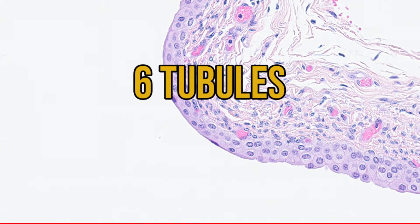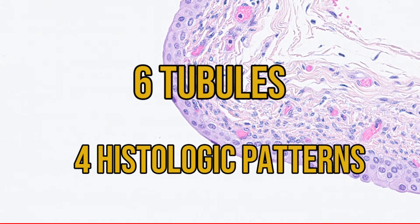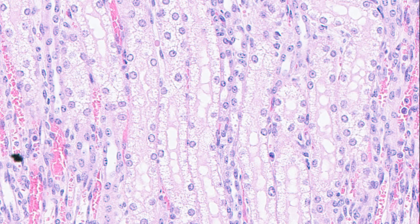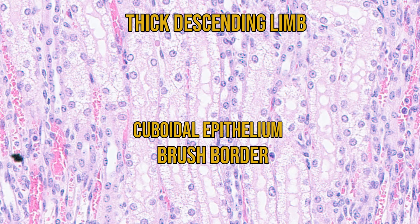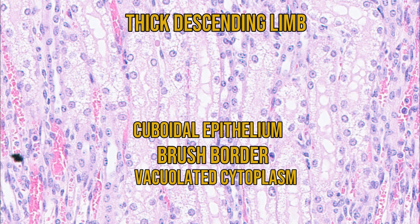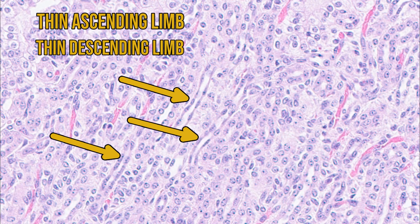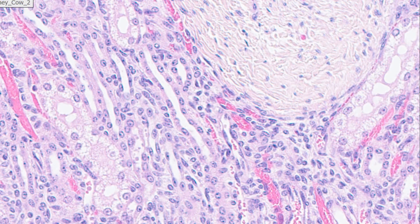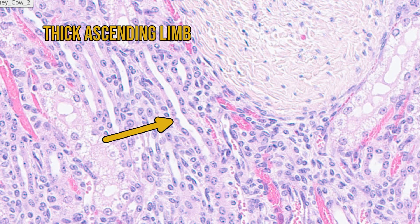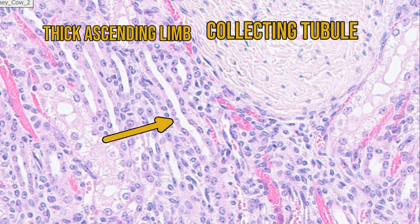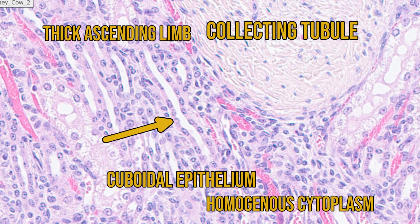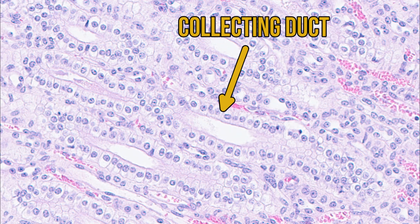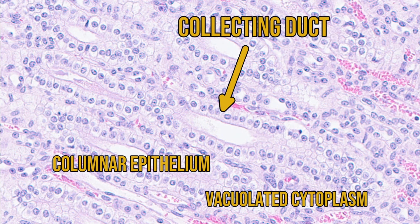Just to summarise, there are six different types of tubule you can see within the medulla, but of those, there are four distinct histologic patterns. First, the thick descending limb looks very similar to the proximal tubules in the cortex, with cuboidal epithelium that has microvilli lining the top and vacuolated cytoplasm. Then the thin ascending and descending limbs, lined by simple squamous epithelium — be careful not to confuse them with blood vessels. Next, the thick ascending limb and collecting tubules have epithelium similar to the distal convoluted tubule: cuboidal with no microvilli and more homogeneous cytoplasm. And finally, the large collecting ducts have columnar, vacuolated epithelium and are in general much larger.